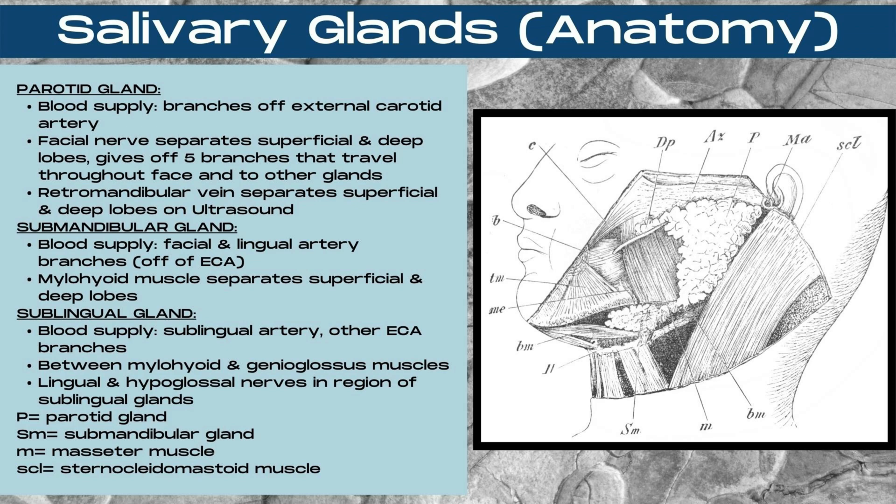For the sublingual gland, the lingual and hypoglossal nerves are directly in the region of the gland. In this diagram to the right, the P demarcates the location of the parotid gland.